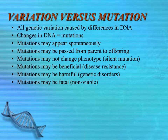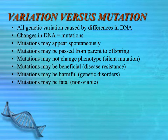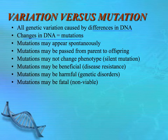So what does variation have to do with mutations? All genetic variation is caused by differences in the DNA. You get different alleles because there is some slight difference in that gene — one allele is slightly different than the other. In general, we talk about changes in DNA as being mutations, so on a very basic foundational level, genetic variation is caused by mutations.